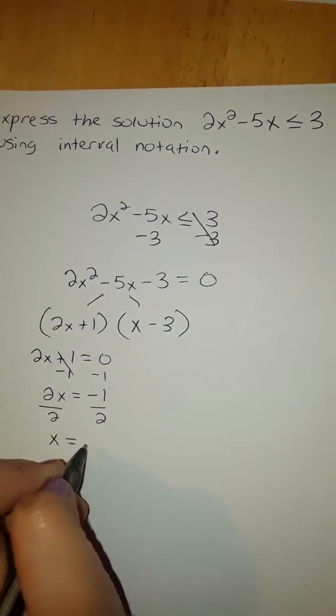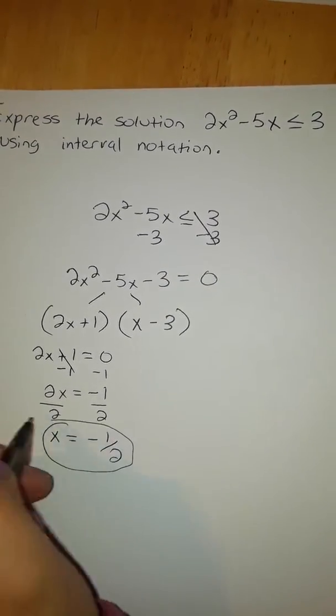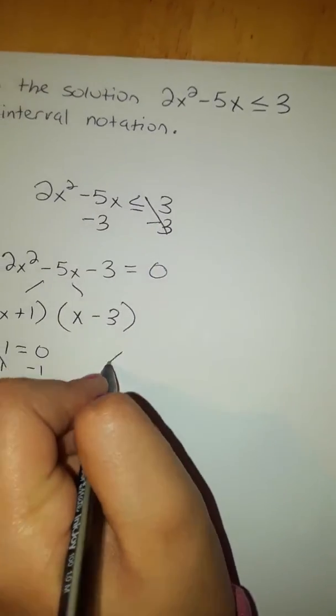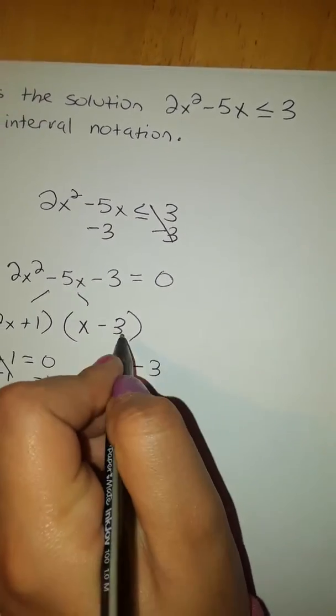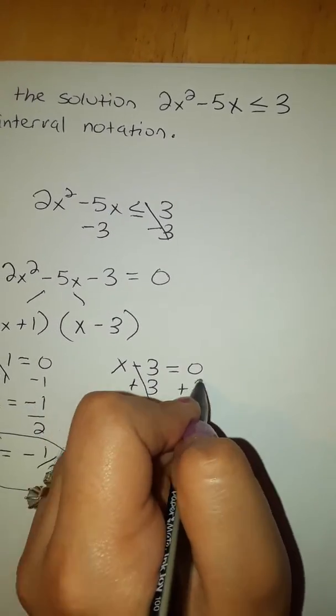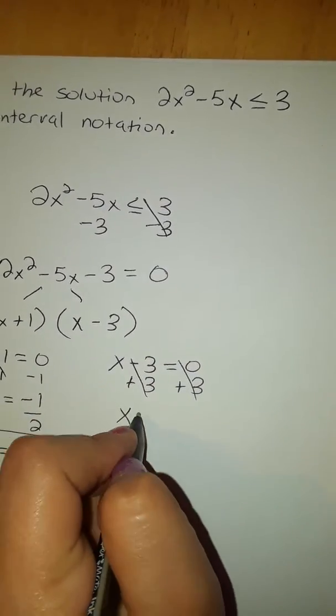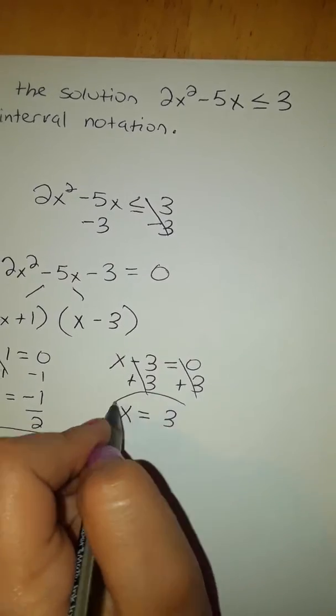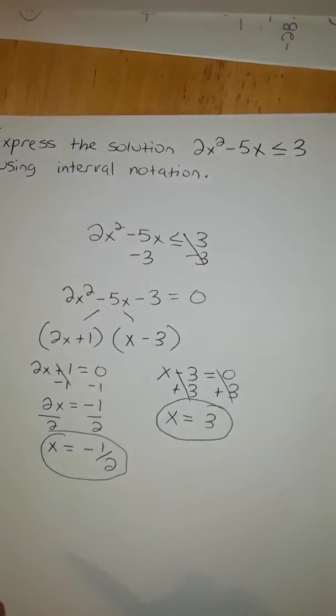So one solution. x minus 3, we're going to set that equal to 0. Add 3 to this side, you get x is equal to 3. That's another solution. But the question is asking to express it in interval notation.